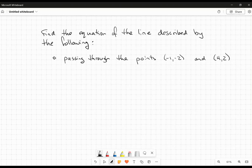Okay, everybody. So in this video here, we're going to do a little bit of coordinate geometry. We're going to find the equation of the line described by the following: passing through the points negative 1, negative 2, and 4, 2.